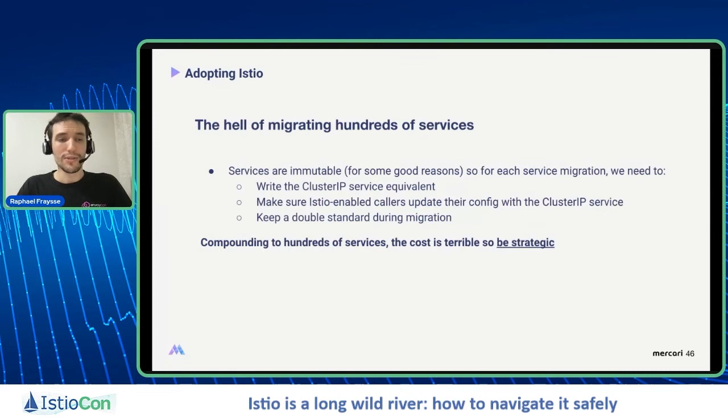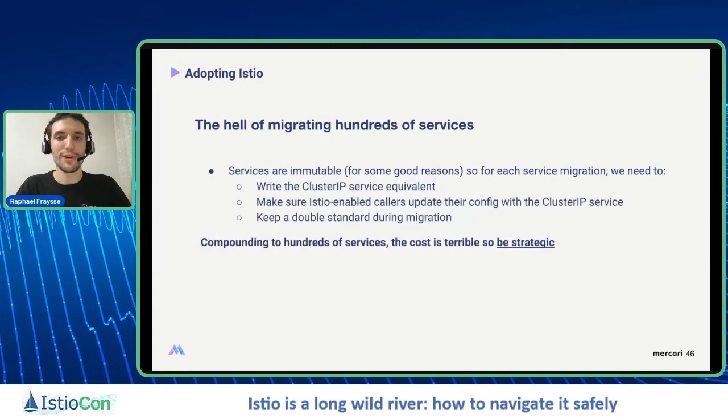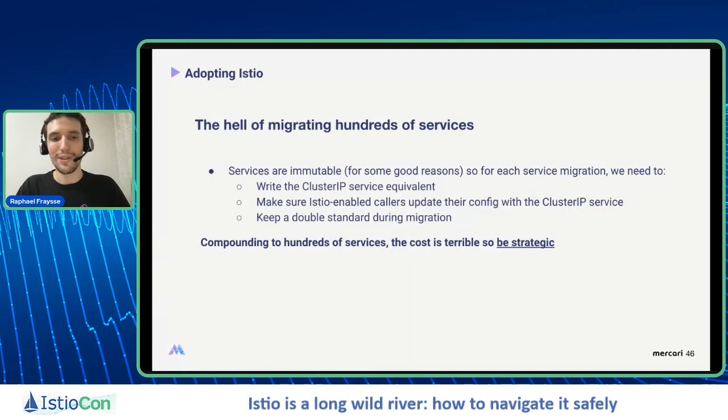This was the start of a long road of pain — the road of hundreds of services. In Kubernetes, services have some immutable fields such as name or cluster IP. So for each service migration, we have two steps: first, write the cluster IP service equivalent to the headless service; second, make sure all Istio-enabled callers update their config with the cluster IP service. This double standard during migration is pretty costly to maintain, and when compounded across hundreds of services, the cost is terrible.